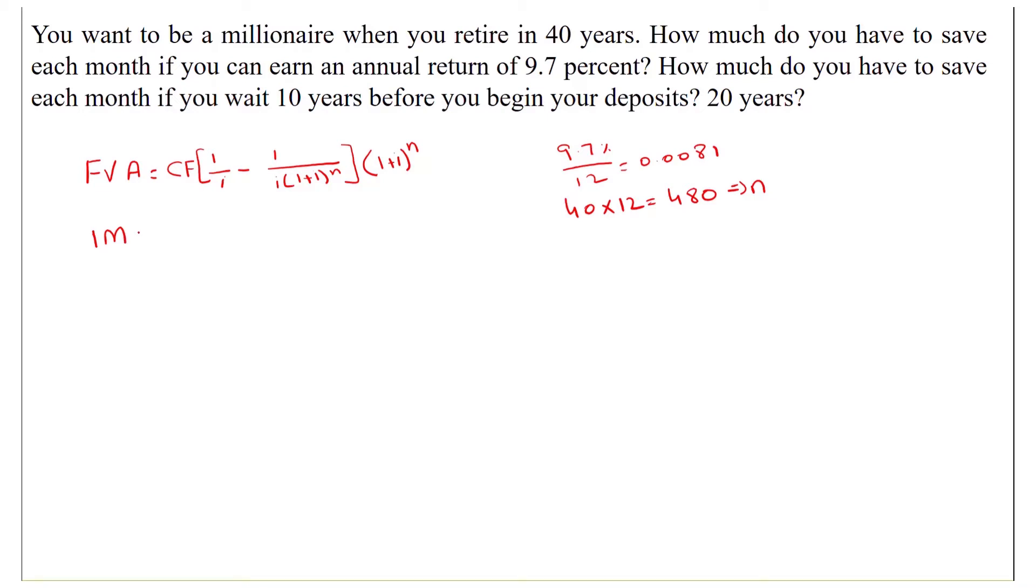Future value of annuity, 1 million, is equal to cash flow that we have to calculate, divided by 0.0081 minus 0.0081 times 1.0081 raised to power 480, times 1.0081 raised to power 480. The cash flows will be 173.184.